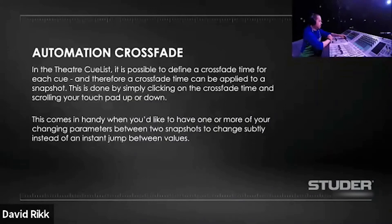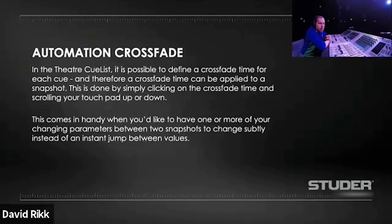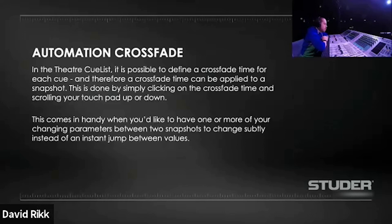Something useful, which I don't use that much, is automation crossfade. Basically with the theater cue list engaged and the crossfade option on your GC, you have the possibility to set up crossfade times between the different snapshots. So you can set the time — how fast or how slow — you want those changes to apply upon recalling the next snapshot.